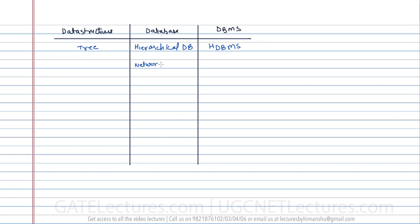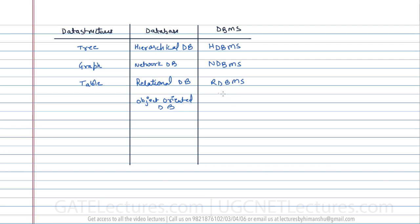Then we have the network data structure, and its corresponding system is called Network DBMS or NDBMS, which uses a graph as its underlying data structure. Then we have the relational database, also called RDBMS, which uses tables. And then we have object-oriented database, called OODBMS, and also ORDBMS.